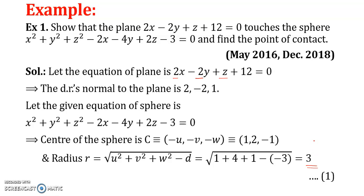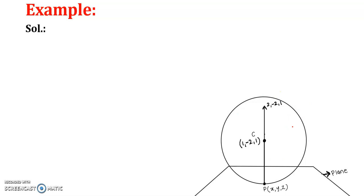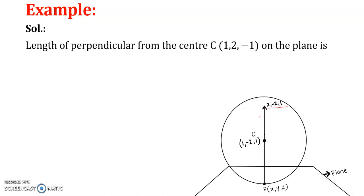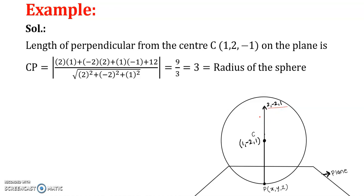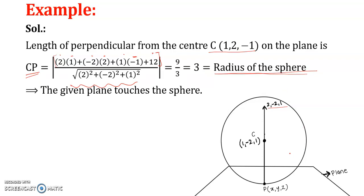We denote the given data as equation number 1 and construct a diagram showing the sphere with center (1, 2, −1). Let P be the point of contact, and the plane has direction ratios (2, −2, 1). The length of the perpendicular from center C to the plane equals |2(1) − 2(2) + 1(−1) + 12| / √(2² + (−2)² + 1²) = radius of the sphere. Since the perpendicular distance equals the radius, this implies the given plane touches the sphere. This completes the first part of the solution.